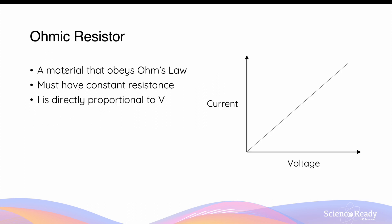An ohmic resistor is a material that obeys Ohm's law, which states that the magnitude of current through a material is directly proportional to the voltage applied to it. On a graph, this is represented by a linear or straight line between current and voltage that passes through the origin, because when voltage is zero, we shouldn't expect any current flowing through the conductor.